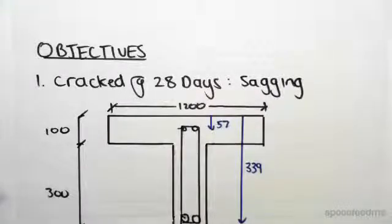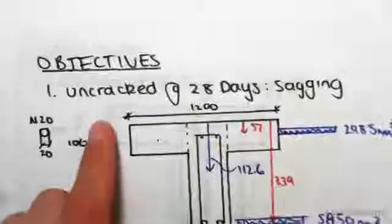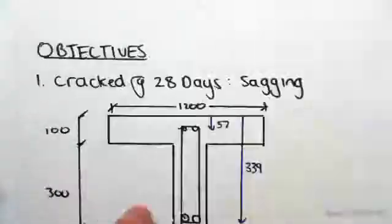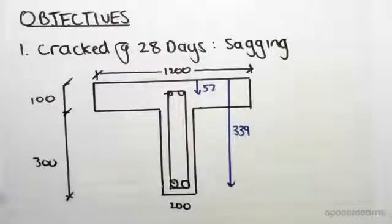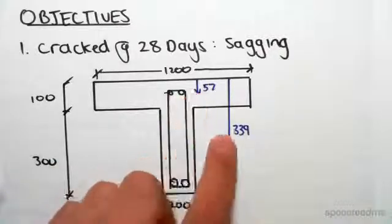Hey guys, the objective of this video is to look at a case with cracked 28 days and we're looking at sagging. In the previous video we looked at uncracked 28 days sagging, now we're looking at cracked 28 days sagging. Here's our information, it's the exact same problem. I've just drawn in the centroid of the bars from the top.